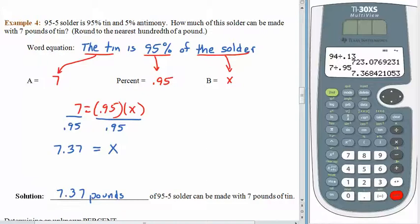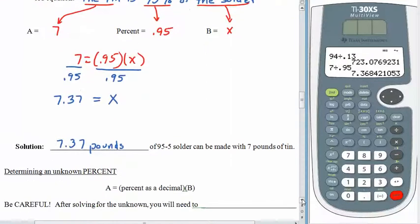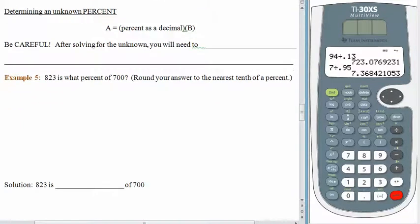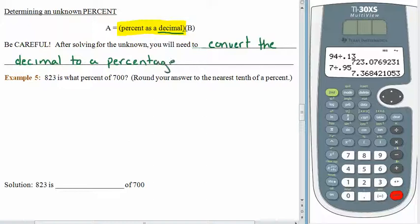Alright. The last thing would be what do we do if we want to find the percentage. And finding the percentage is a little bit trickier. Not a lot, just a little. We already know how the formula is going to work. An amount is a certain percent of the base. The thing about it is, is that this percent is as a decimal. So if we're looking for the percent, the equation is going to give us a decimal. And that means that we are going to need to convert it to a percentage. So we need to convert the decimal to a percentage.